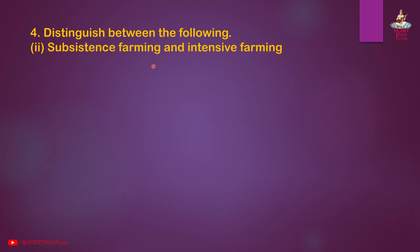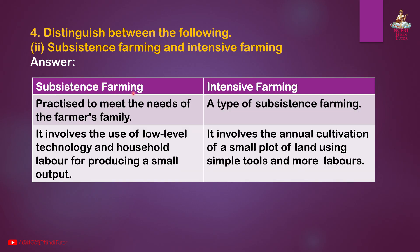Second, subsistence farming and intensive farming. Answer: Subsistence farming is practiced to meet the needs of the farmer's family; it involves the use of low-level technology and household labor for producing a small output. Intensive farming is a type of subsistence farming that involves the annual cultivation of a small plot of land using simple tools and more labor.